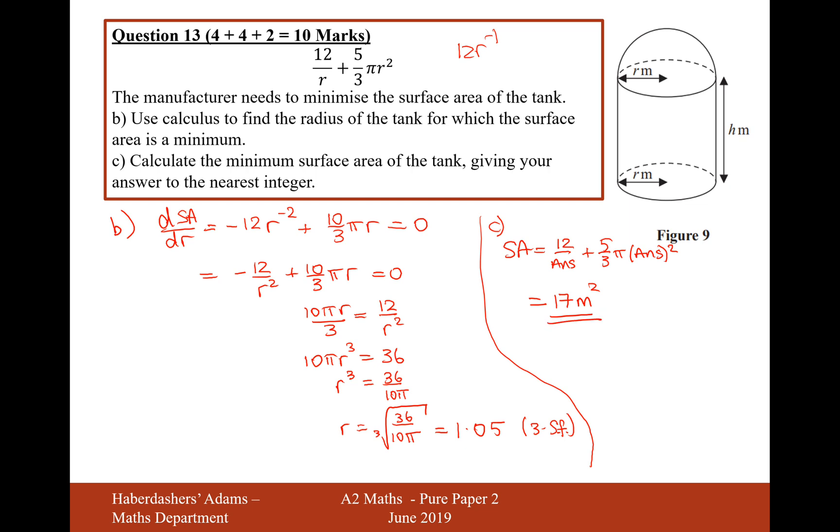There we are, that's the answer for this question here. 10 marks for that one there. Quite a difficult question, this one, especially getting the first bit. But if you didn't get the first bit, and if you didn't get to show that, you can still have a go at questions b and c, even if you haven't been able to do part a. Six marks still available there for a bit of differentiation and substituting into the formula. That's the answer for this question. Let's now move on to the final question of the paper, question 14.